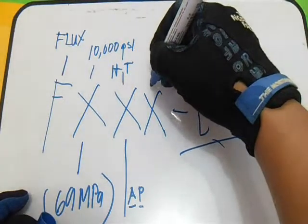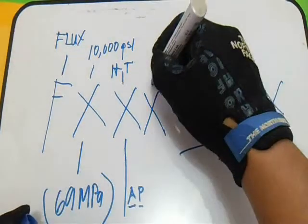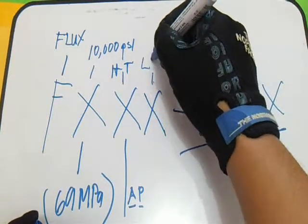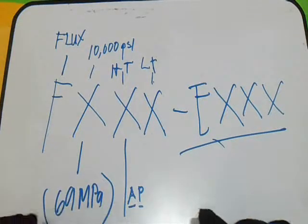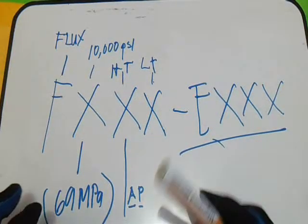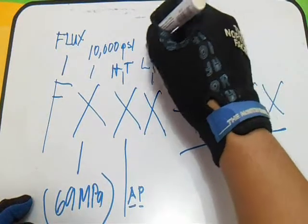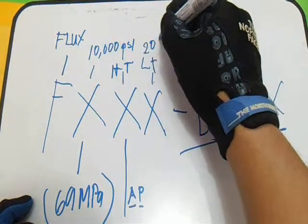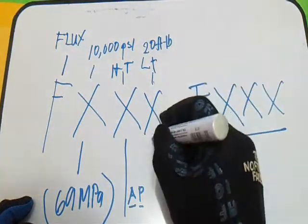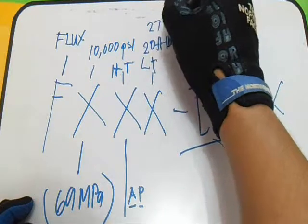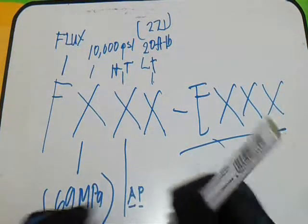The third X indicates the lowest temperature at which the strength of the weld metal meets or exceeds 20 foot-pounds or 27 joules.